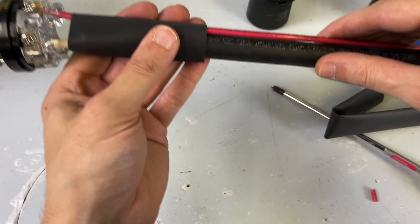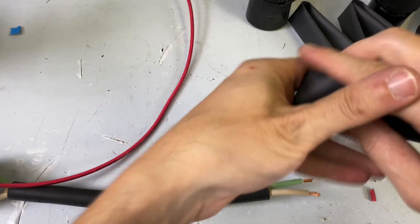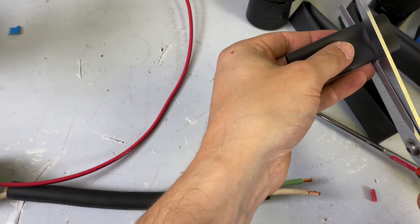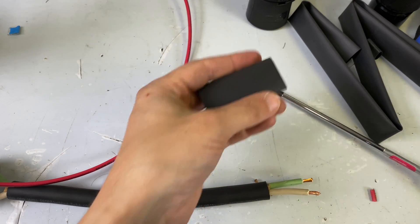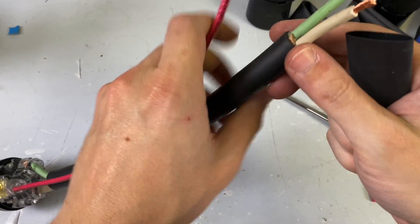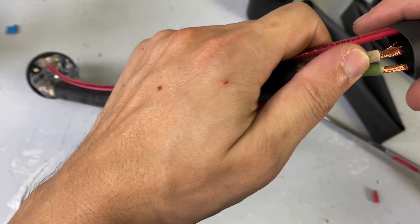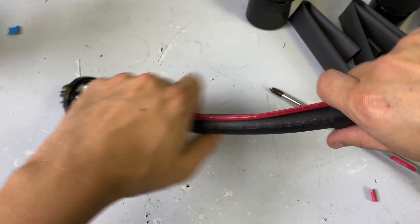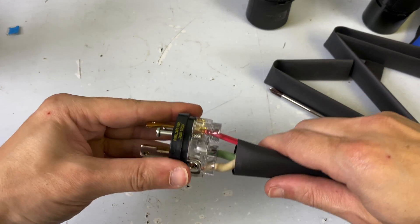And I'm just going to run our heat shrink right up here. Let's see, is that a little too big? Might be a little too big. Cut that down just a skosh. Highly industrialized technical term there, a skosh. Put this on here. I'm just going to put that on there. Heat gun.